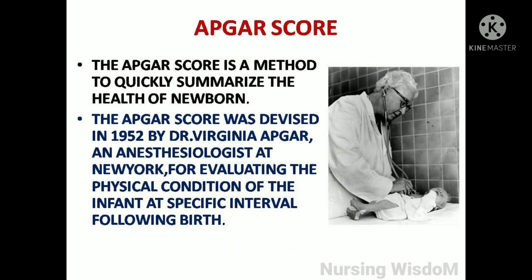The APGAR score is a method to quickly summarize the health of a newborn. It was devised in 1952 by Dr. Virginia Apgar, an anesthesiologist at Newark, for evaluating the physical condition of the infant at a specific interval following birth.